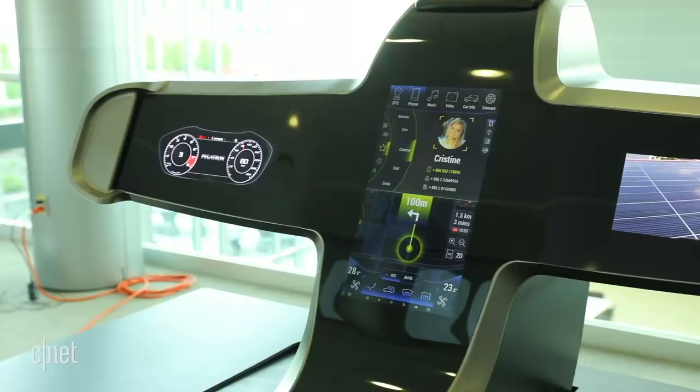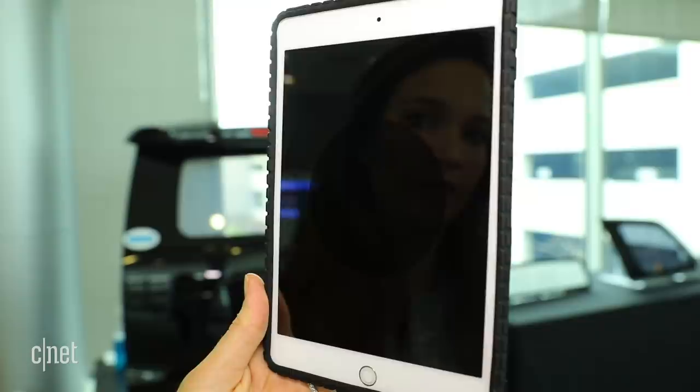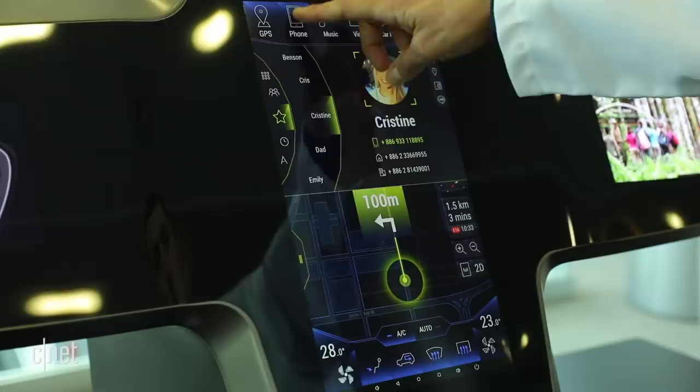Corning has also been working on curved dashboard displays, textured glass that can mimic different car surfaces, and anti-reflective glass that will reduce glare and make fingerprints disappear.